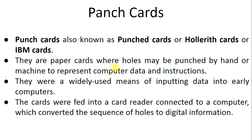Just like in paper tape data is stored by punching, in punch cards data is also stored by punching holes. The cards were fed into a card reader connected to a computer, which converted the sequence of holes to digital information. This digital data is then stored in the computer or in a drive.